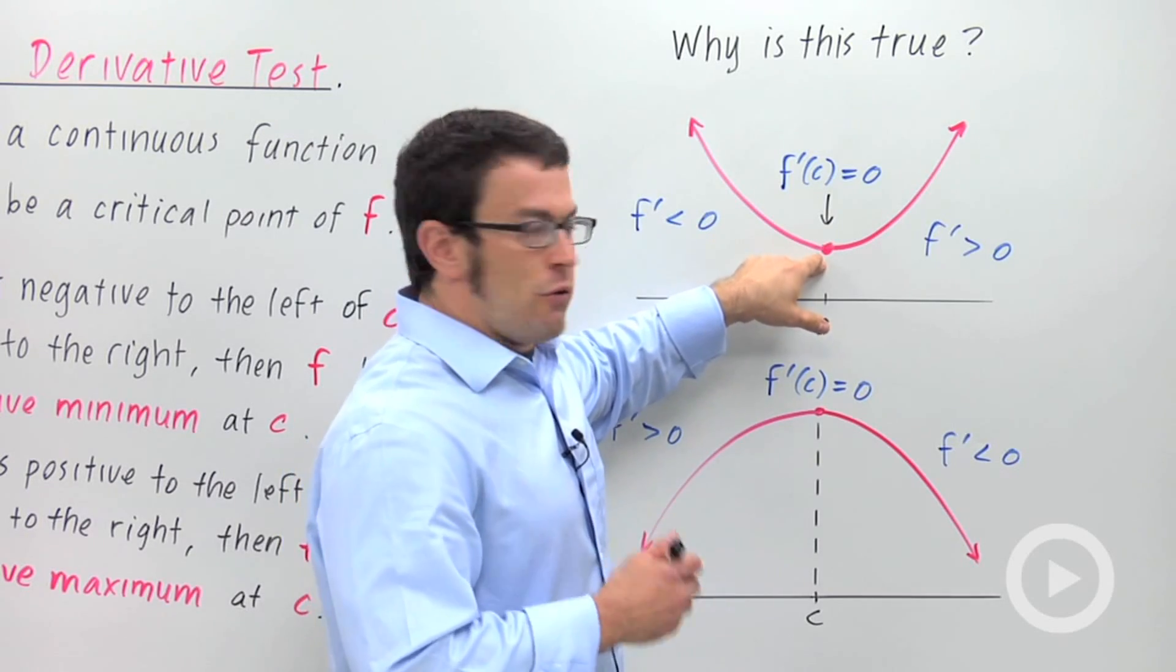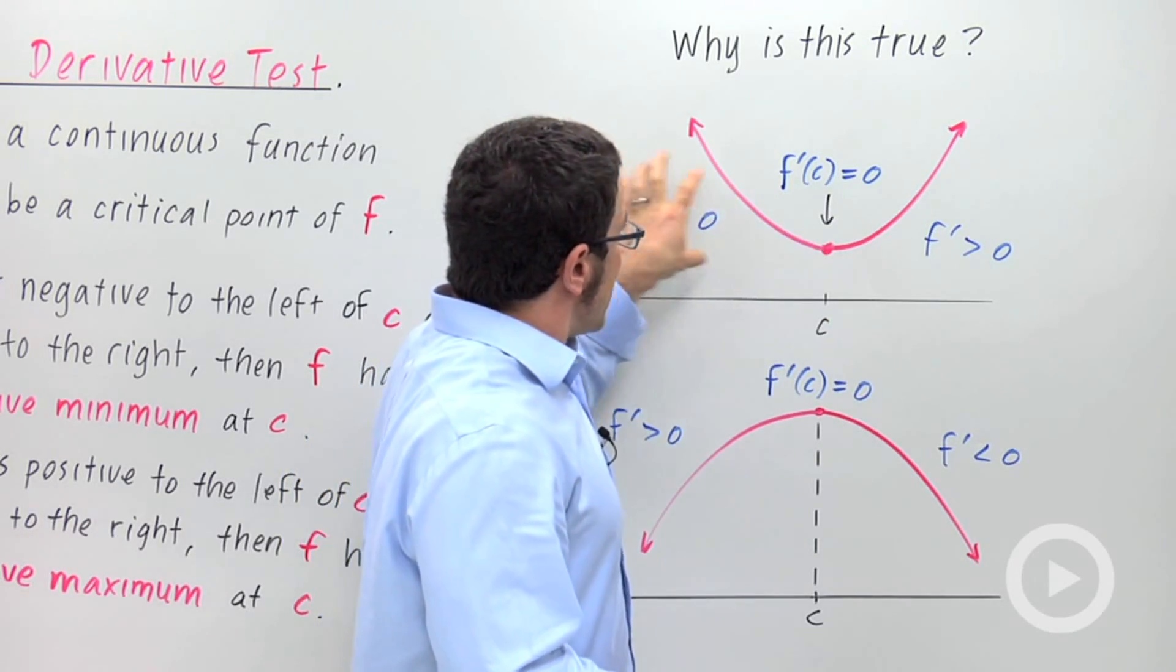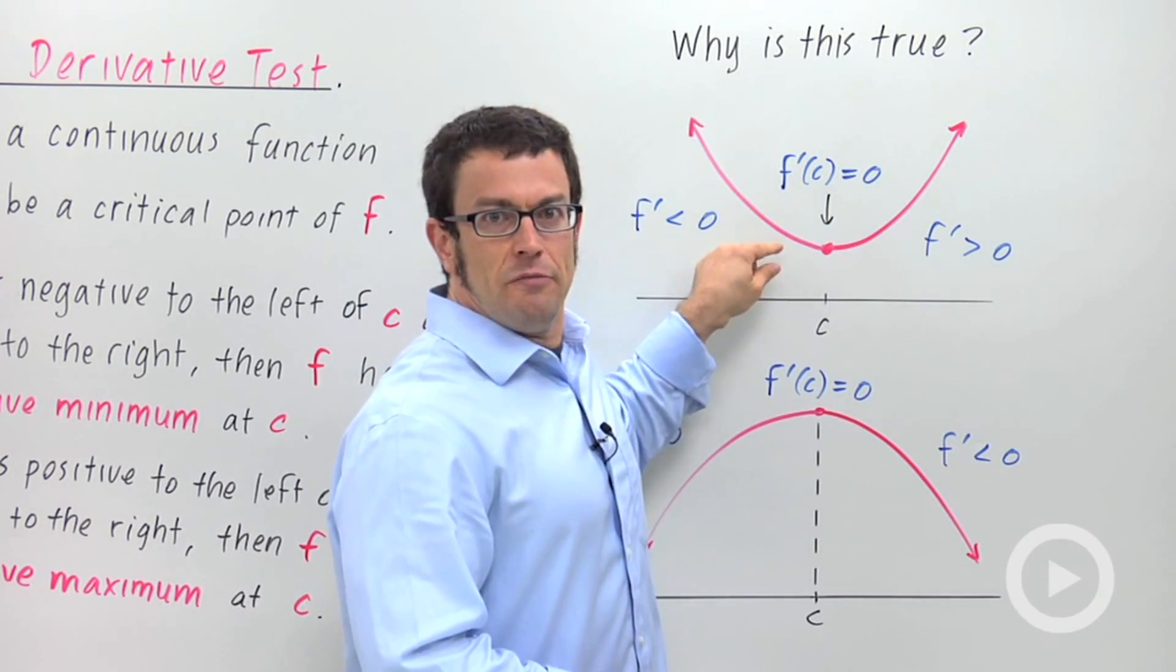But remember, what we're going to be searching for is where the derivative goes from negative to positive. That will indicate a relative minimum.